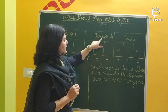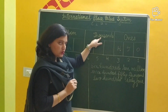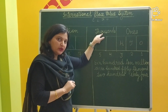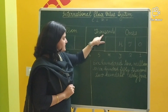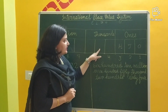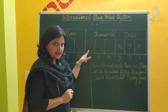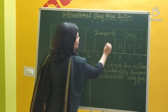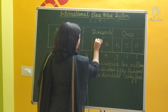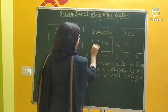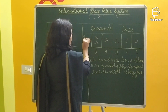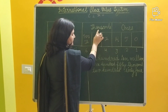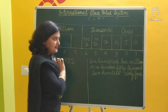Now in the thousands period, it is different compared to the Indian system. In the international place value system, the thousands period has 3 different places: thousand, ten thousand, and hundred thousand.